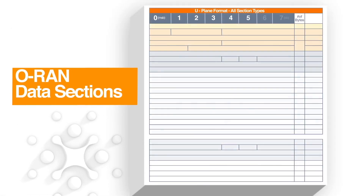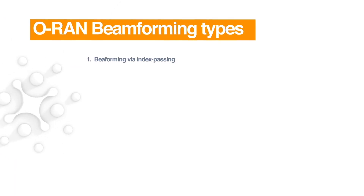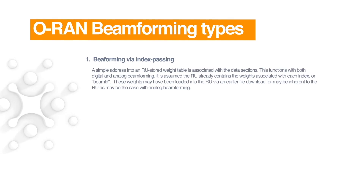The data in the U-plane is not sent in full precision, which can vary between DU and RU implementations of the physical layer, but instead in a compressed format. A commonly used format is block floating point compression, which compresses data using a common exponent over a set of 12 tones of a resource block. The parameters for compression are also described for both the downlink and uplink in the C-plane.